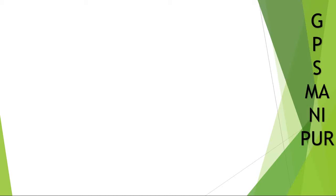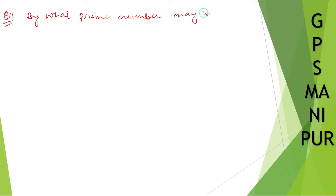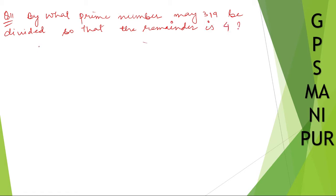Now we are doing question number 11. What does question 11 say? By what prime number may 319 be divided so that the remainder is 4? The remainder is 4. Solution: we need to find by what prime number this must be divided so that the remainder is 4.